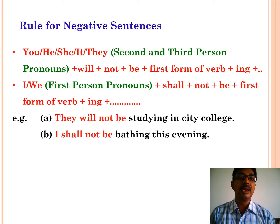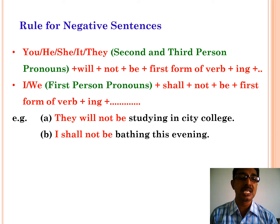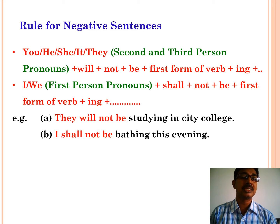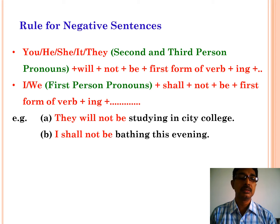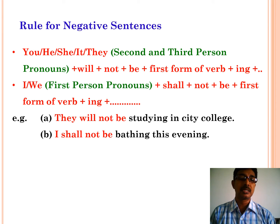Now let us see how to frame a negative sentence in future continuous tense. For second and third person pronouns — you, he, she, it, they — plus will — plus not — plus be — plus first form plus -ing — plus object. For first person I or we — plus shall — plus not — plus be — plus first form plus -ing — plus object. Examples: they will not be studying in the city college. I shall not be bathing this evening.